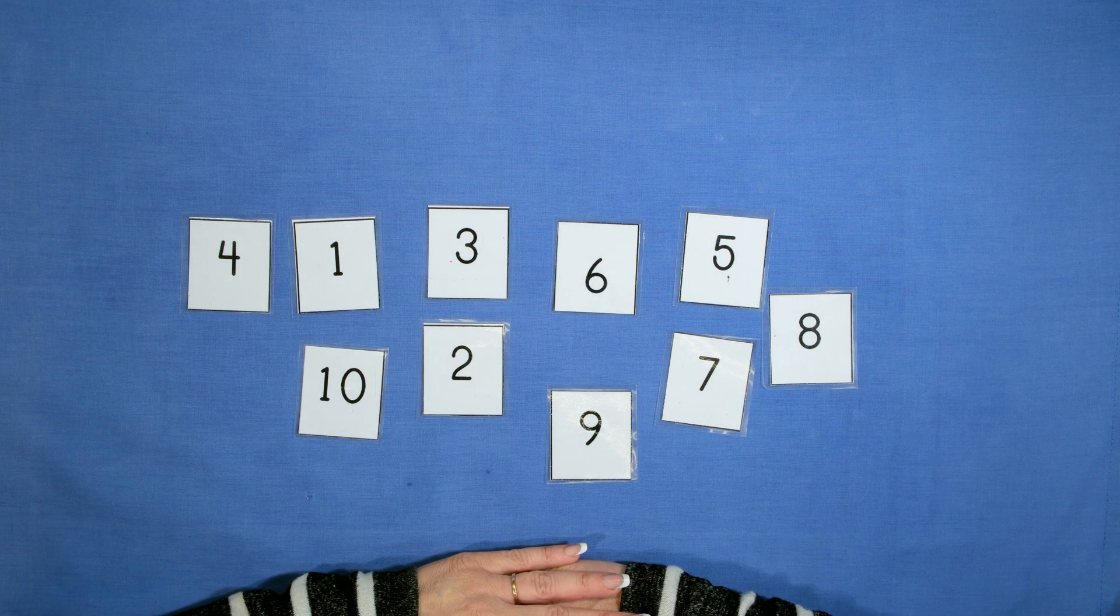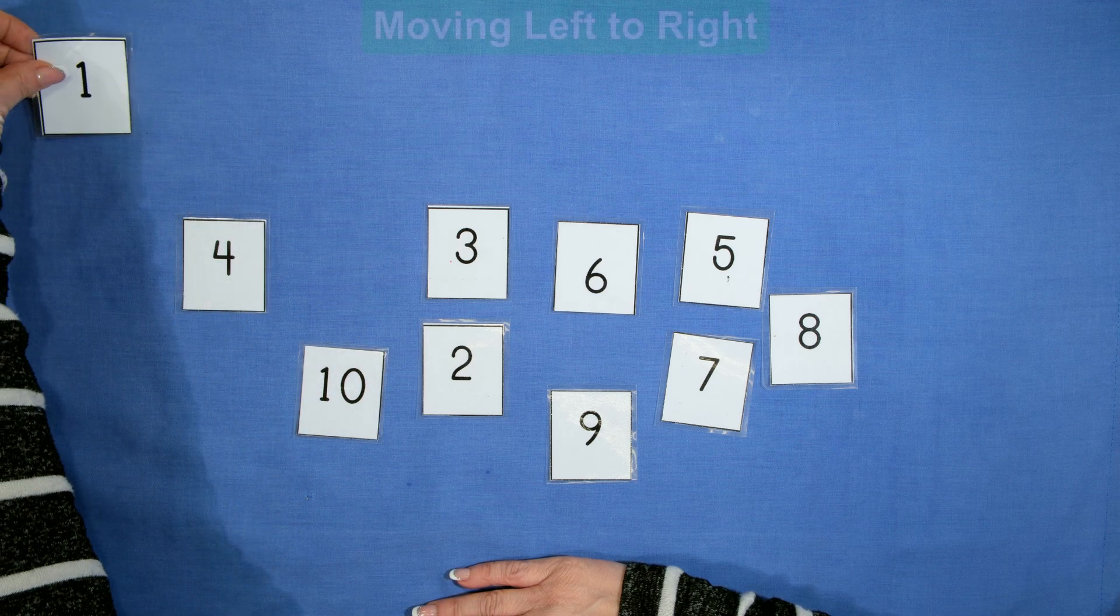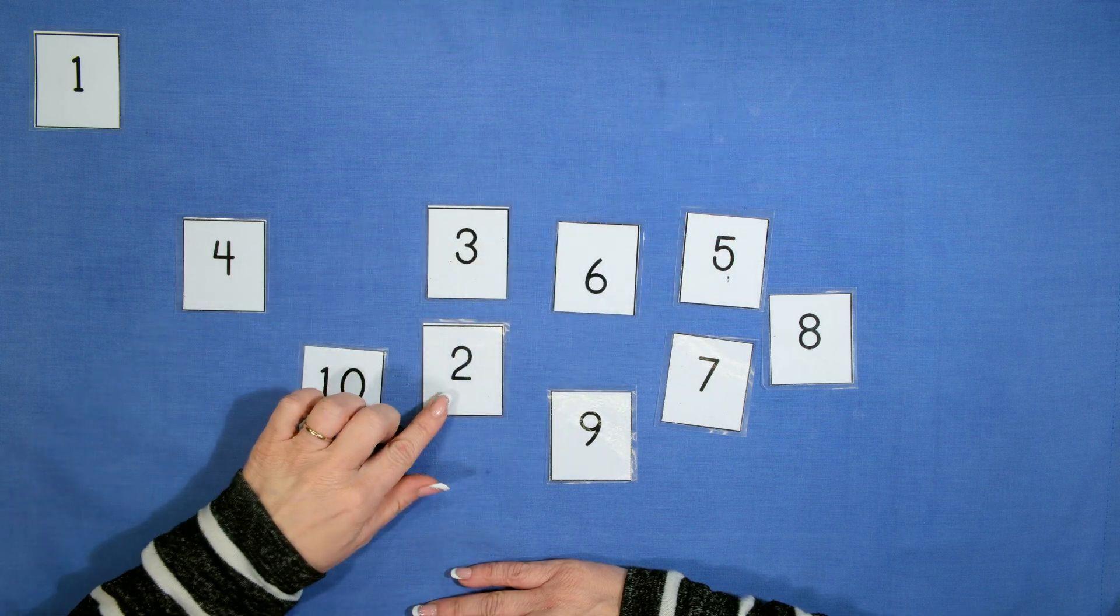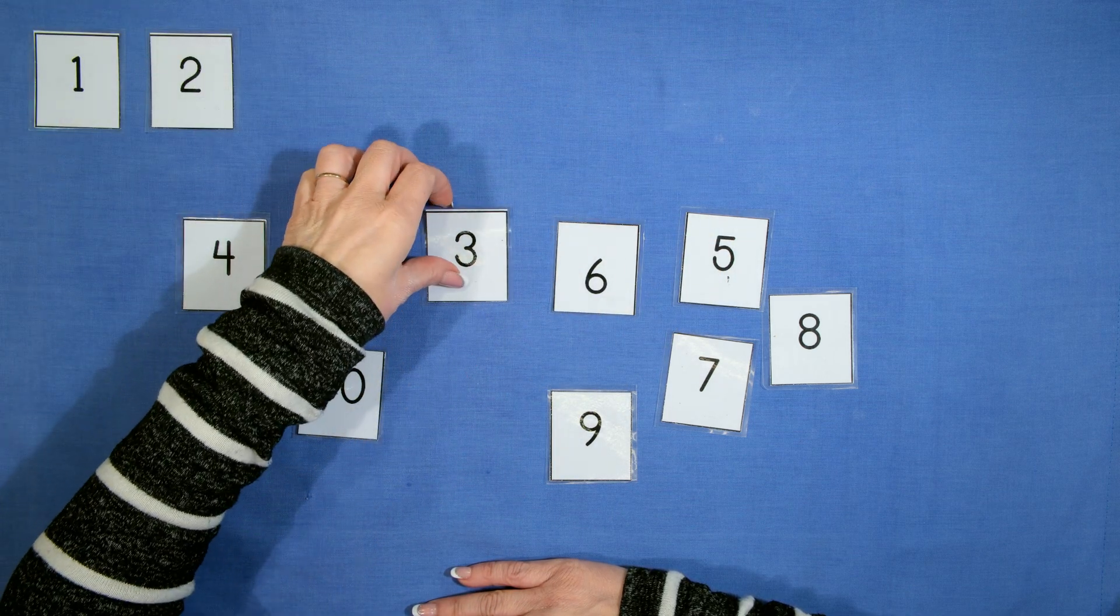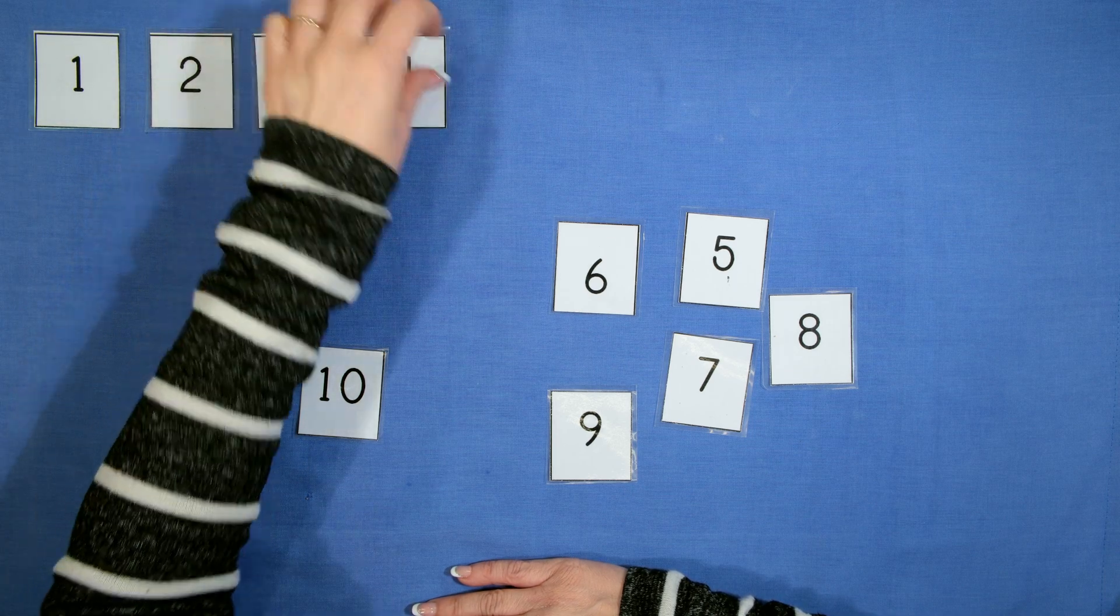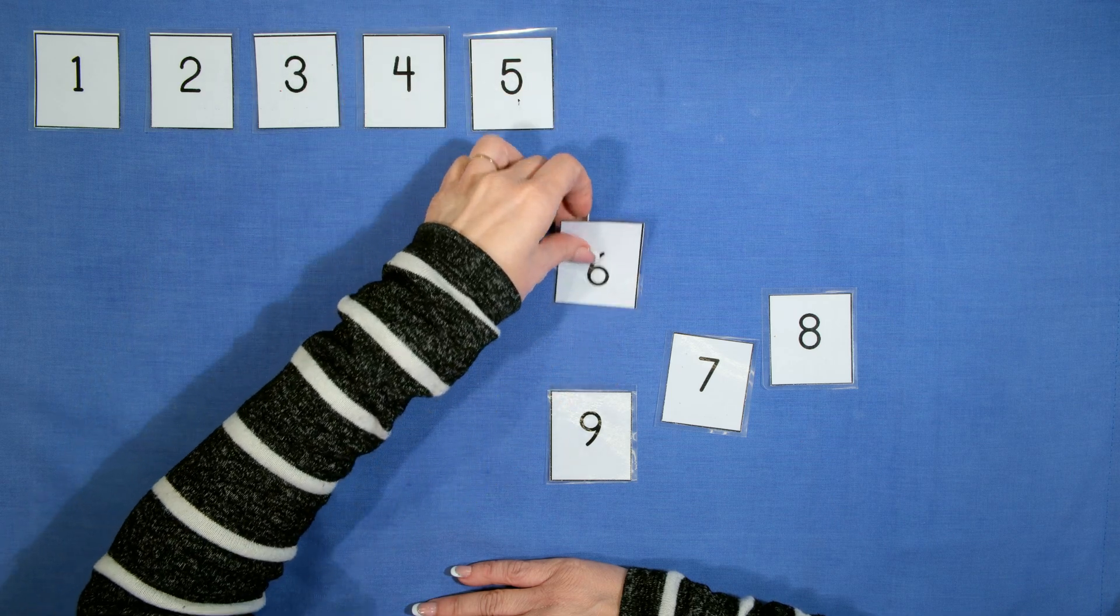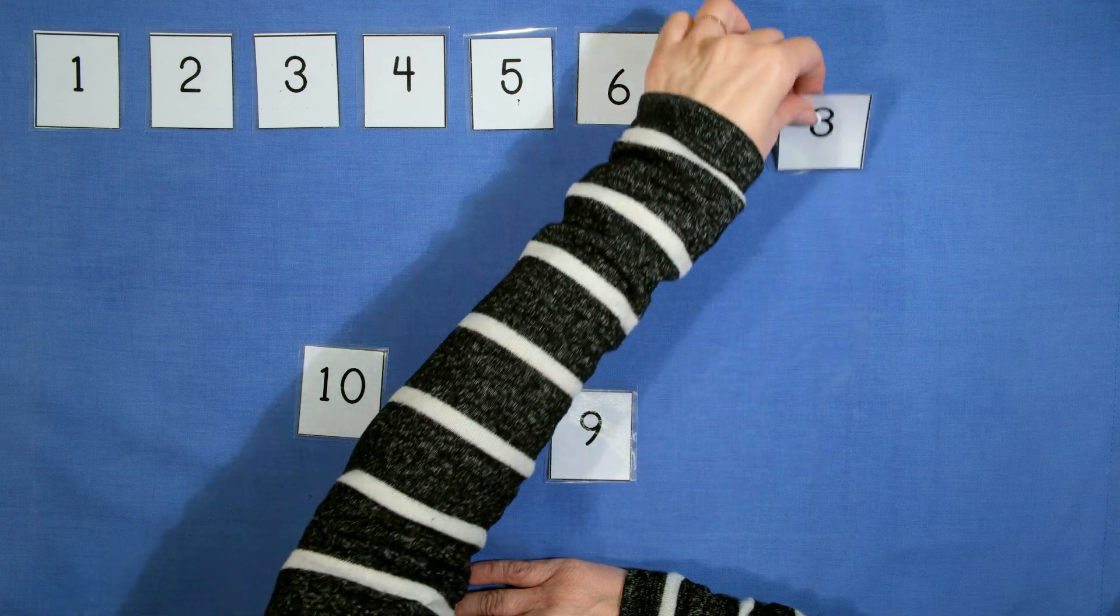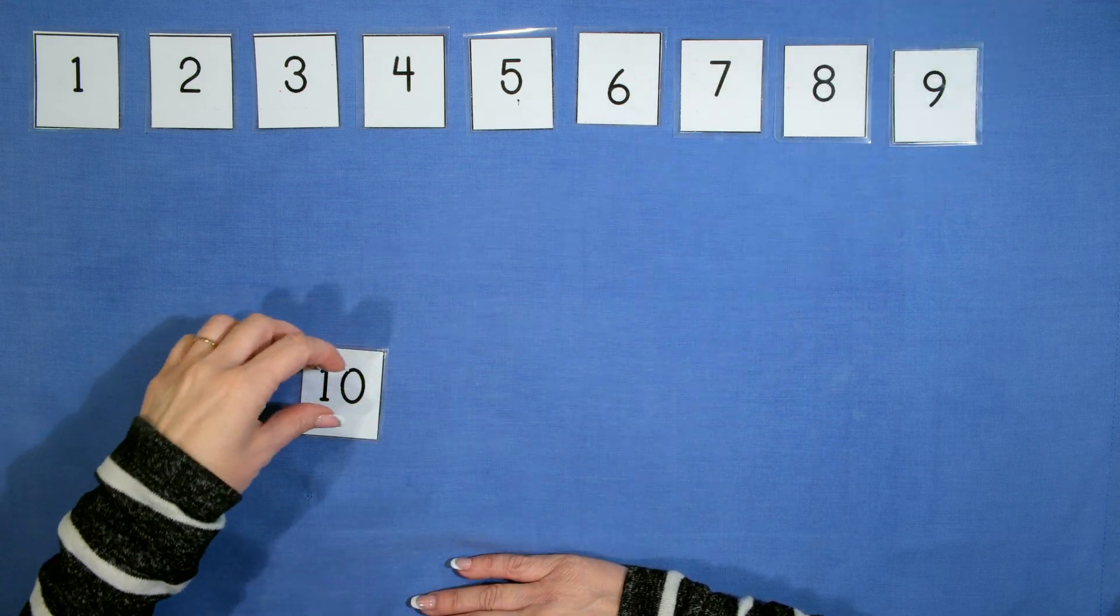Now we are going to sequence the numbers. Number one, start from left, go horizontally to the right. Number two, three, four, five, six, seven, eight, nine, ten.